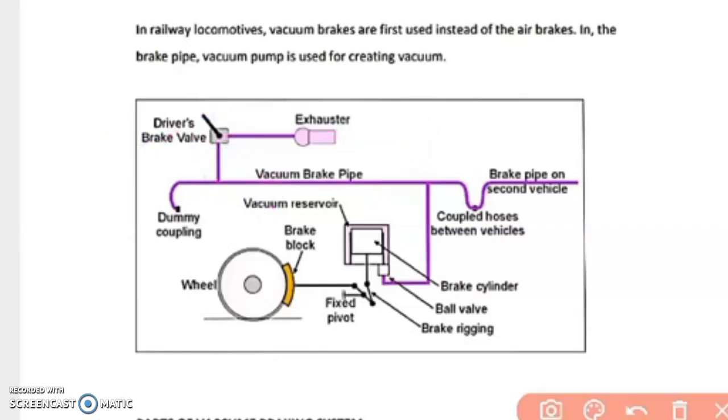When we apply the brakes, air is exhausted from the cylinder head of the piston. At the same time, atmospheric pressure acts on the rear side of the piston to exert a powerful pull on the rod attached to this piston.